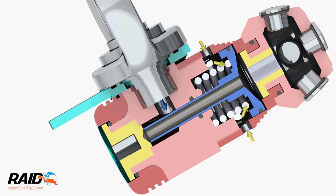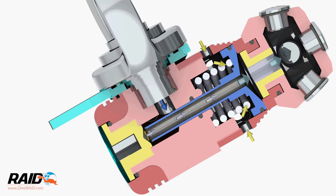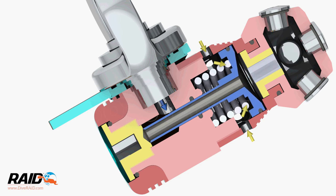As the diver inhales, the pressure on the back of the piston reduces. The spring pushes the piston away from the high pressure seat and allows breathing gas to flow, shown by the blue arrows. As the gas flows over the high pressure seat and into a larger space, the pressure reduces. This is how the cylinder pressure is reduced to the intermediate pressure by the first stage.